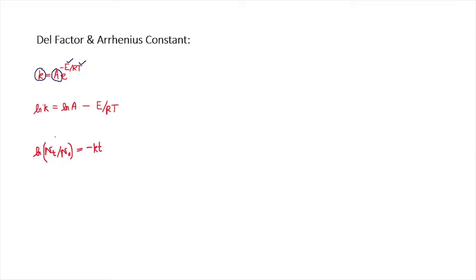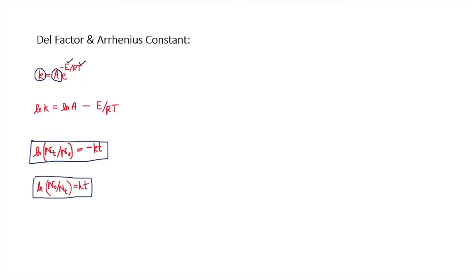From the previous lectures, we know that ln(NT/N0) = −KT. This was already derived in the previous discussion. By the property of logarithms, taking the negative on both sides, this can be written as ln(N0/NT) = KT. We now define the del factor (∇) as ln(N0/NT).